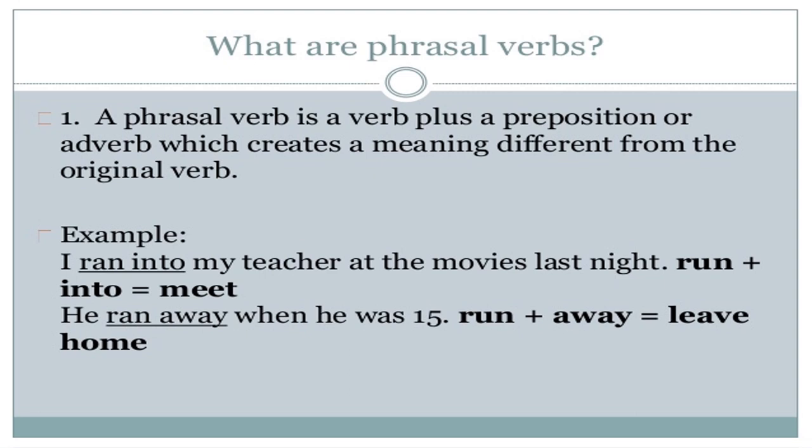A phrasal verb is a verb plus a preposition or adverb which creates a meaning different from the original verb. For example, 'I ran into my teacher at the movies last night' — 'ran into' doesn't really mean you bumped into someone; it means to meet. When we take the base form 'run' and add 'into', it becomes 'ran into' and the meaning is to meet. Similarly, 'He ran away when he was 15' only means he left home. The meaning is different from the original base form of the verb. This is a phrasal verb.